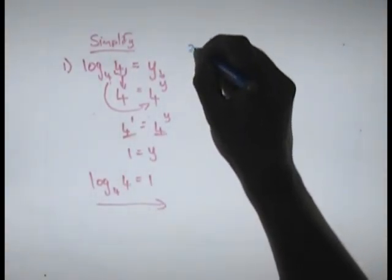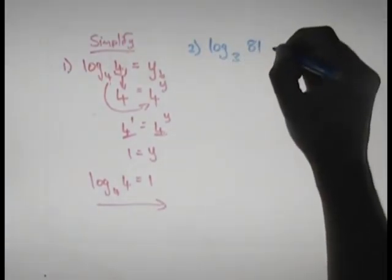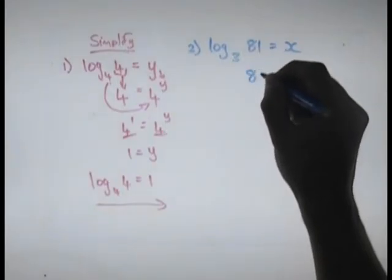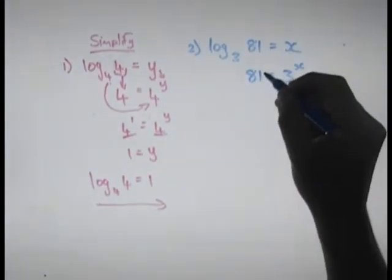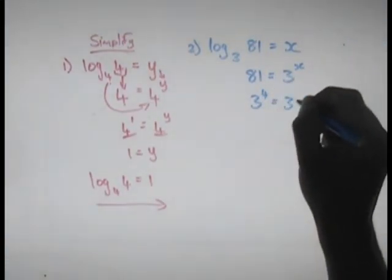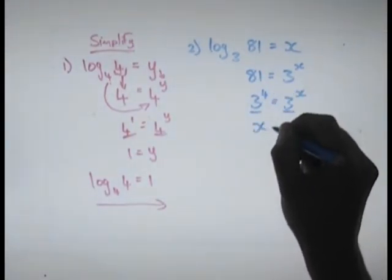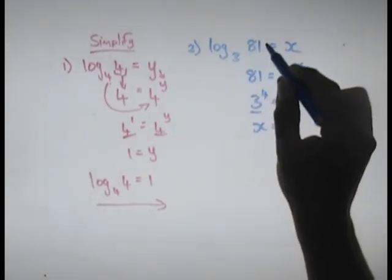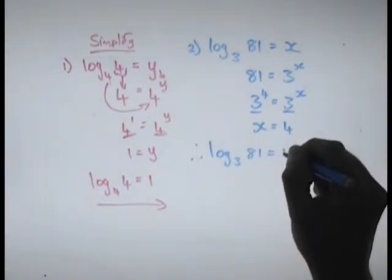The next one was: log base 3 of 81. I'll start by assigning it a variable x, which means 81 equals 3 to the power x. Now, 81 is the same as 3 to the power 4, so 3 to the power 4 equals 3 to the power x. Since the bases are the same, the exponents must be the same, so x equals 4. Therefore, log base 3 of 81 equals 4.